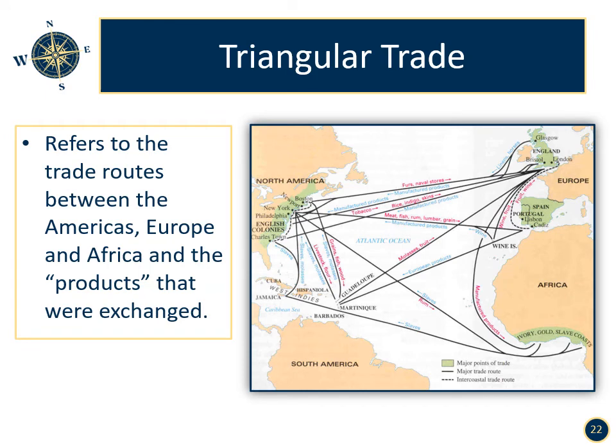Triangular trade refers to the trade routes between the Americas, Europe, and Africa, and the products and slaves that were exchanged. Europeans set up slave ports along the coast of Africa and hired African slave catchers to catch fellow Africans from their homes. European countries did not fully colonize the interior of Africa until 1885 to 1914, in what later became known as the Scramble for Africa.